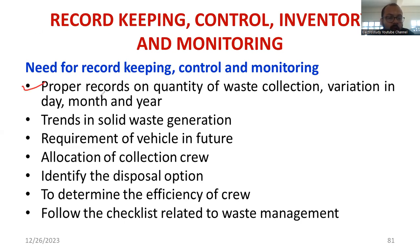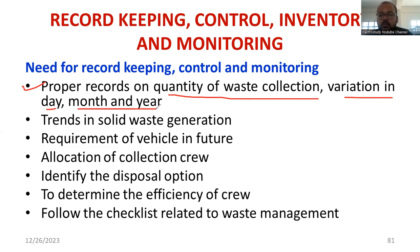Proper records on quantity of waste collection allow us to analyze variation by day, month, and year. For example, how much waste was generated in February, what type of waste was produced in March, what happened in April, and what was the status of waste production during the rainy season in June and July. This gives us a better analysis of waste trends over time.